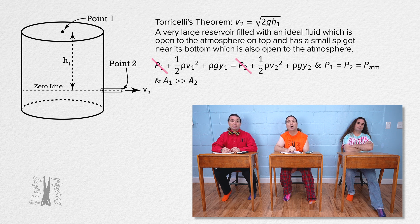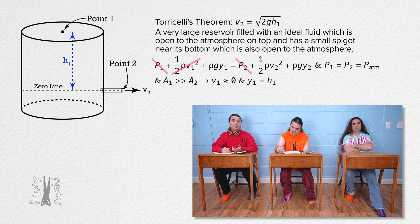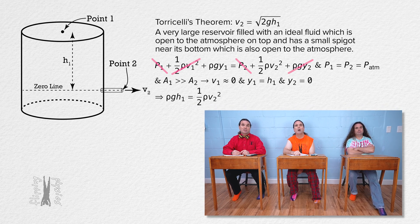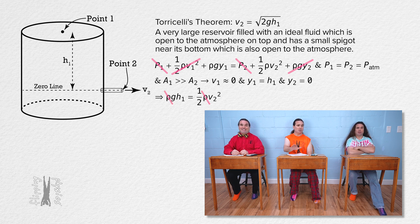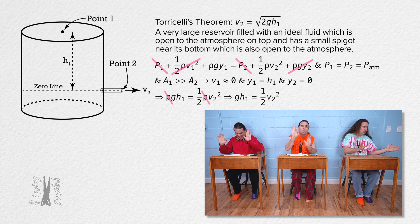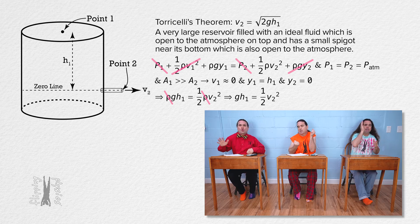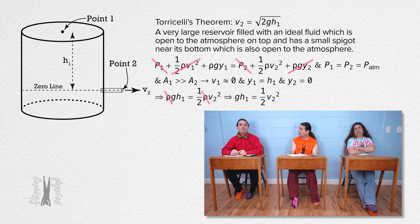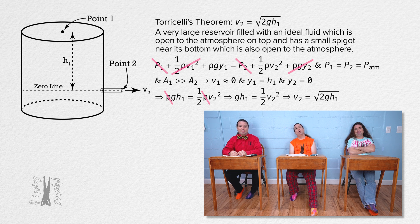Because the cross-sectional area at point 1 is much, much larger than the cross-sectional area at point 2, we can assume the speed of the fluid at point 1 is approximately equal to zero. Let's identify the height of point 1 above the horizontal zero line as h1. Point 2 is at the horizontal zero line, so its vertical height is zero. All we are left with is fluid density times gravitational field strength times h1 equals one-half times fluid density times speed at point 2 squared — and everybody brought fluid density to the party. We can solve for the speed at point 2: it equals the square root of 2 times gravitational field strength times height h1.